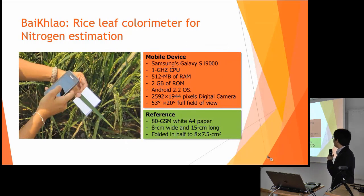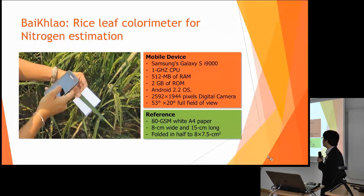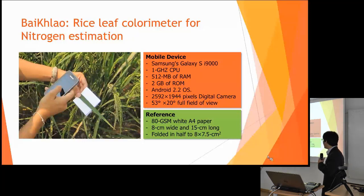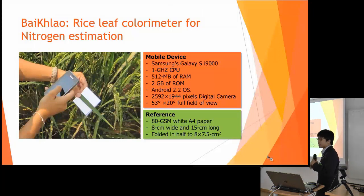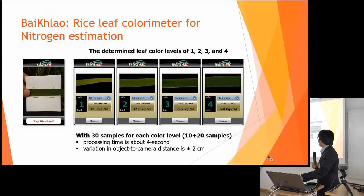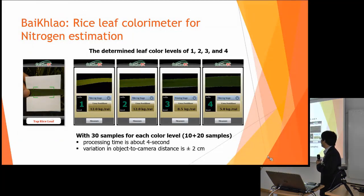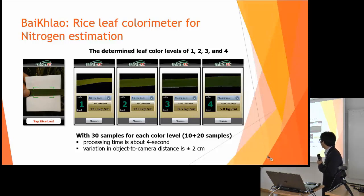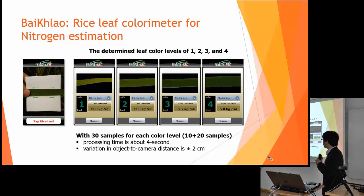This shows the filter and the mobile device we use — a fairly old Android mobile phone. For the reference, we use a white A4 paper that you can find anywhere, and you just take a photo of the rice leaf. Our app can then tell the color level and what nitrogen the rice leaf needs more. We tested it at one, two, three, and four levels.